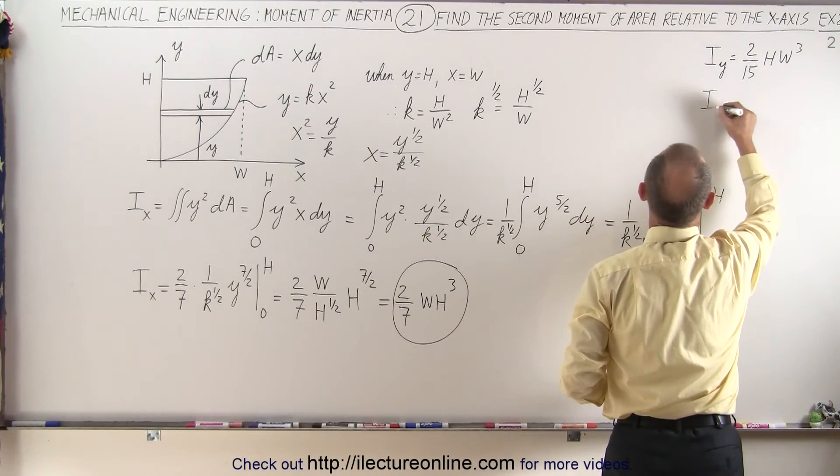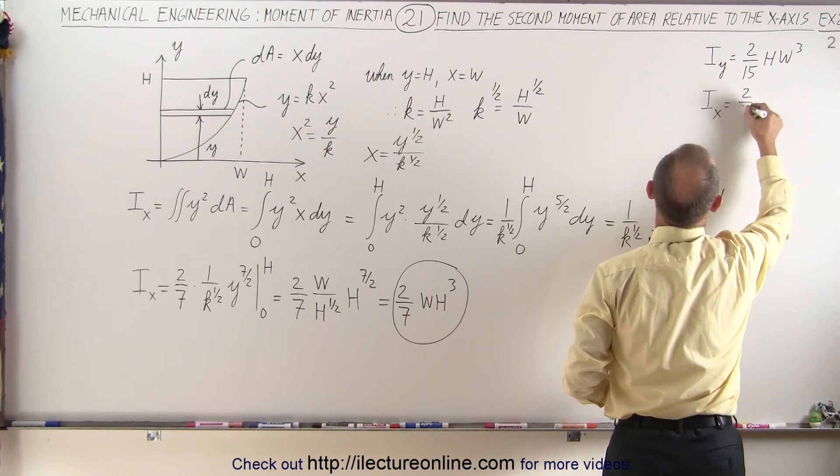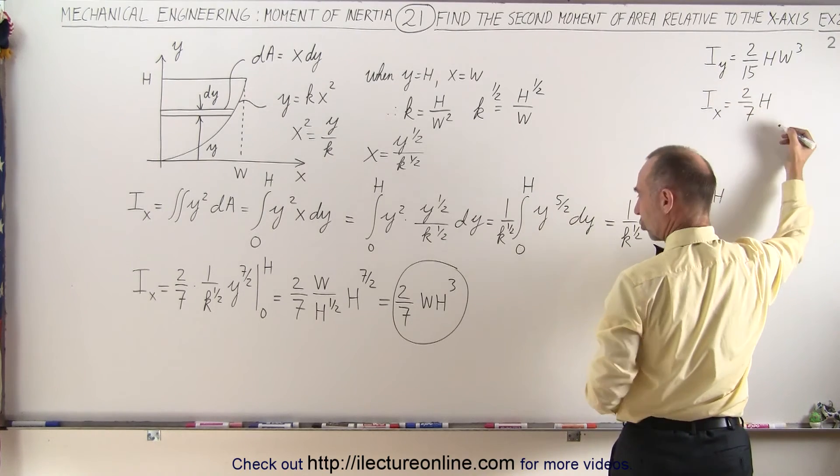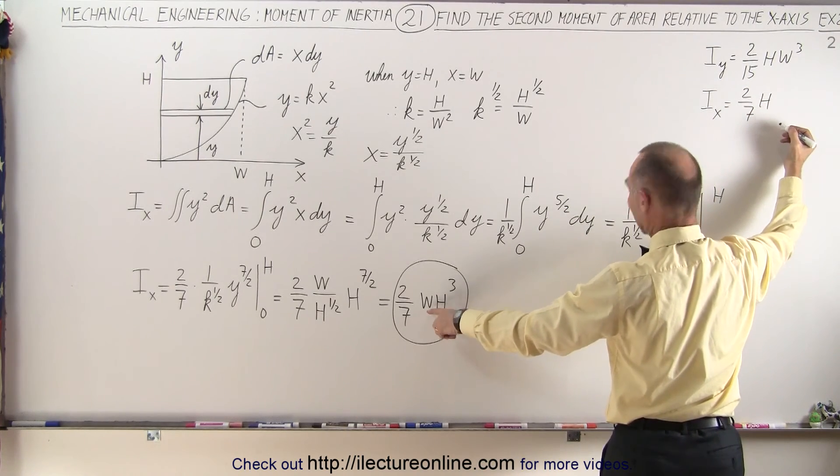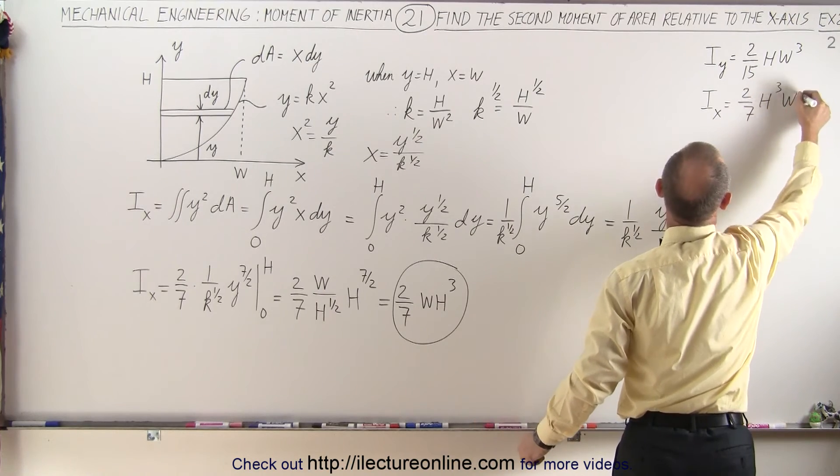And let's go ahead and place that up on the right, upper right corner of the board, i sub x is equal to 2 sevenths h cubed w.